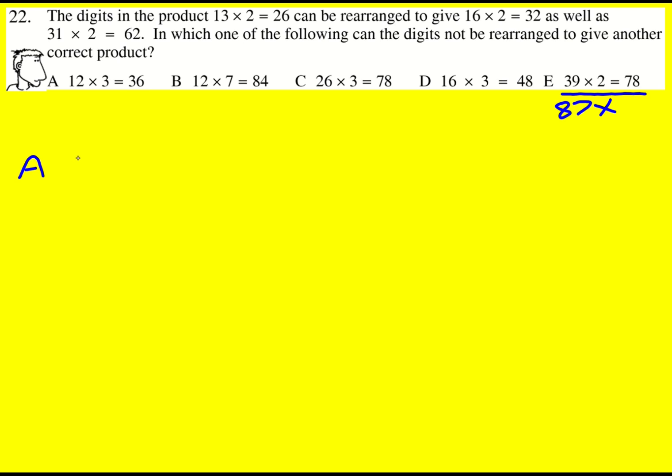So for A, I'll go through A in some detail. 12 times 3 works, but we can't just swap the 3 and the 2 around. We'd get 26 here, so no.